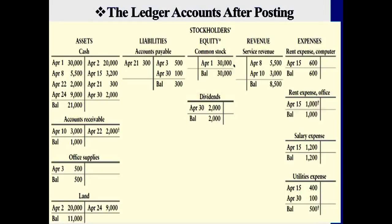After a month, once all transactions are summarized in T accounts, the balance amounts are ready for the trial balance. The trial balance is an internal document where you simply take the balance from each T account — you won't see detailed transaction amounts, just the final balance for each account. The purpose is to summarize all the increases and subtractions across multiple transactions, then copy that net balance into the trial balance.